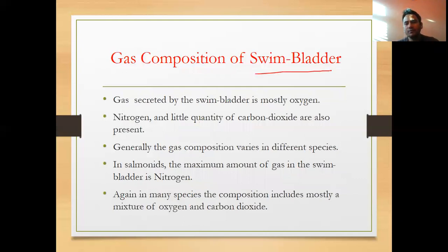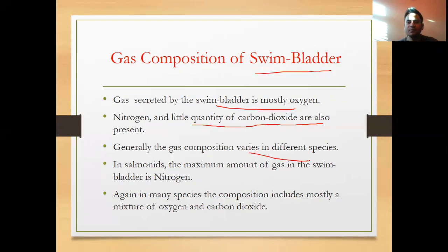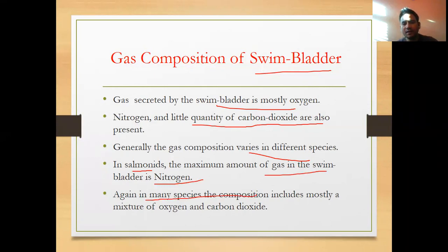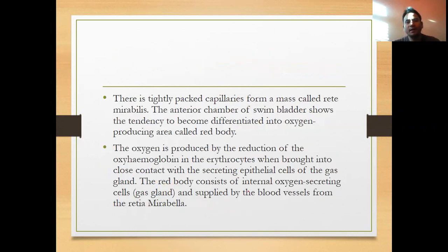Regarding gas composition of the swim bladder, the gas secreted is mostly oxygen. Nitrogen and a small quantity of carbon dioxide are also present. Generally the gas composition varies in different species. In salmonids, the maximum amount of gas in the swim bladder is nitrogen. In many species the composition includes mostly a mixture of oxygen and carbon dioxide. Tightly packed capillaries form a mass called rete mirabile.